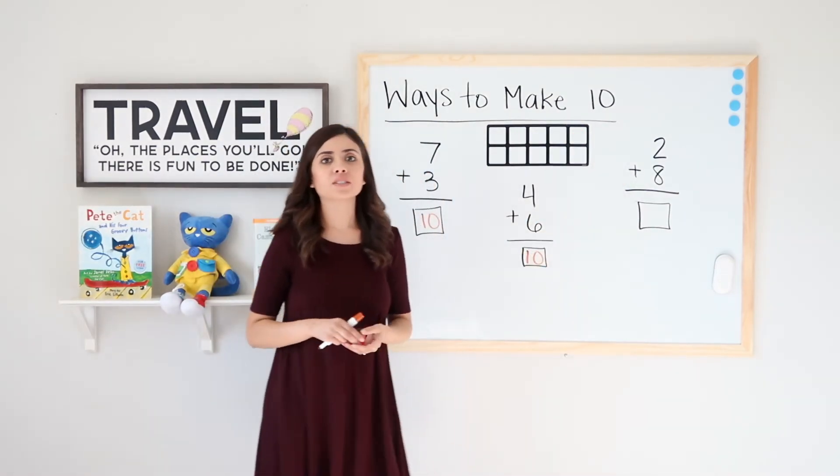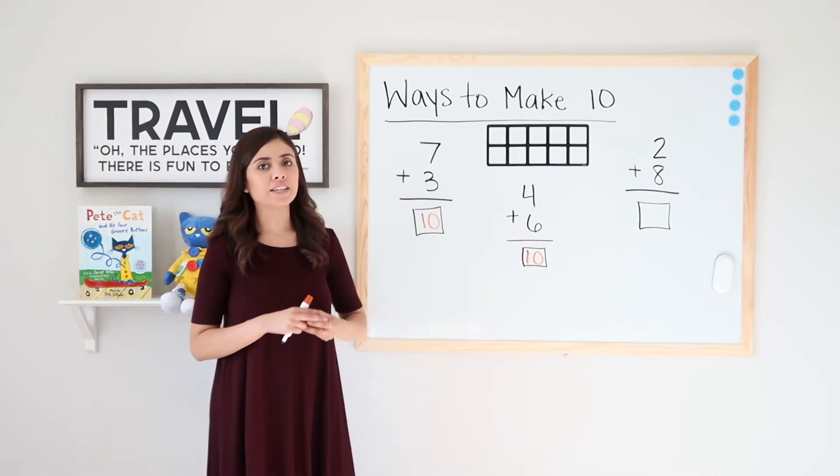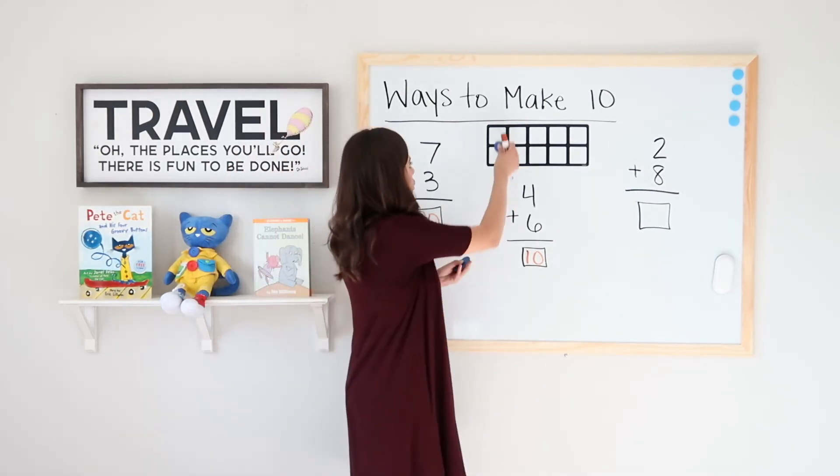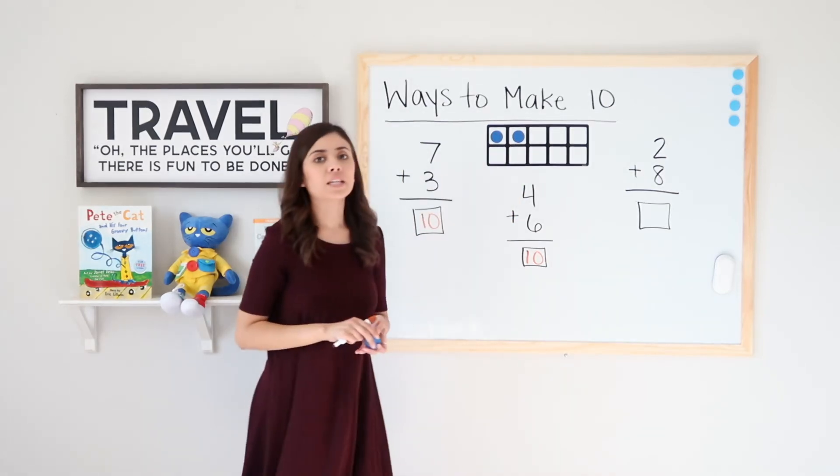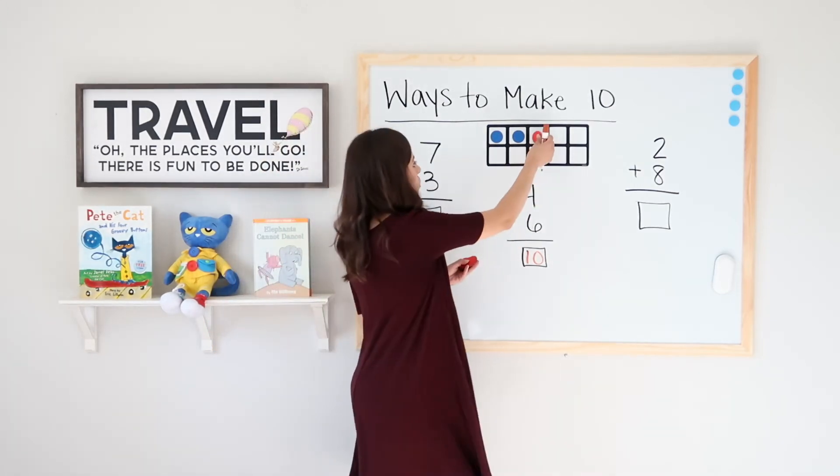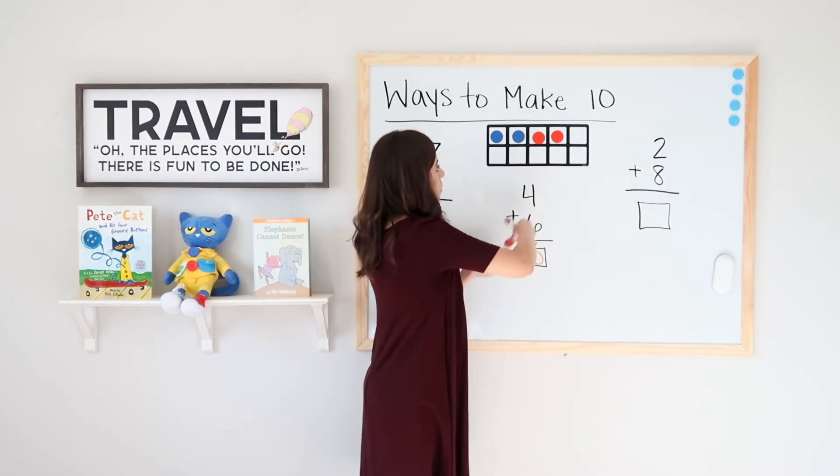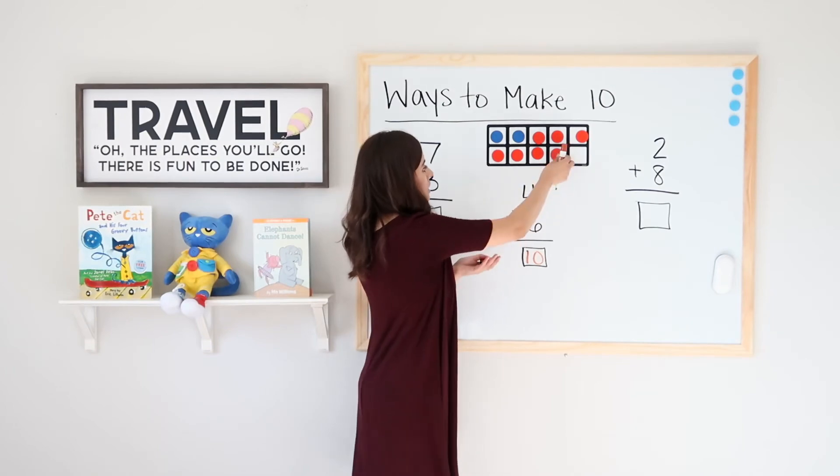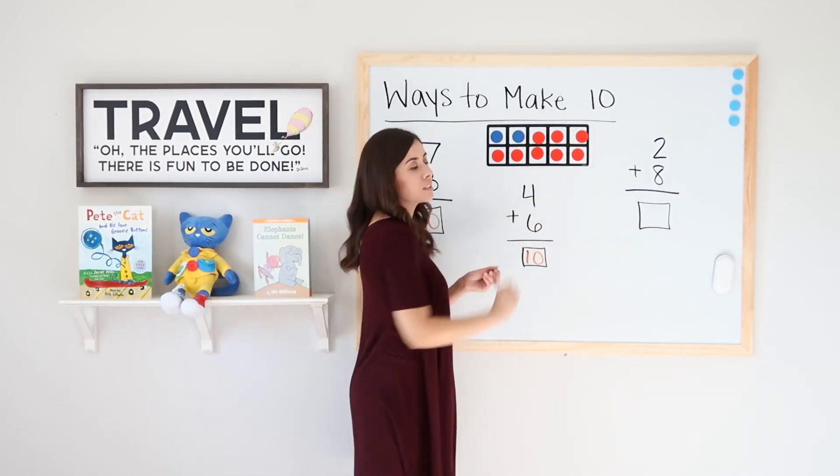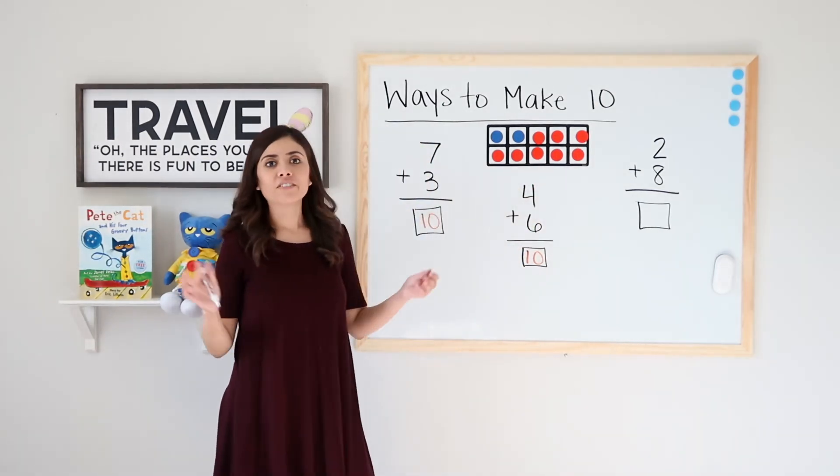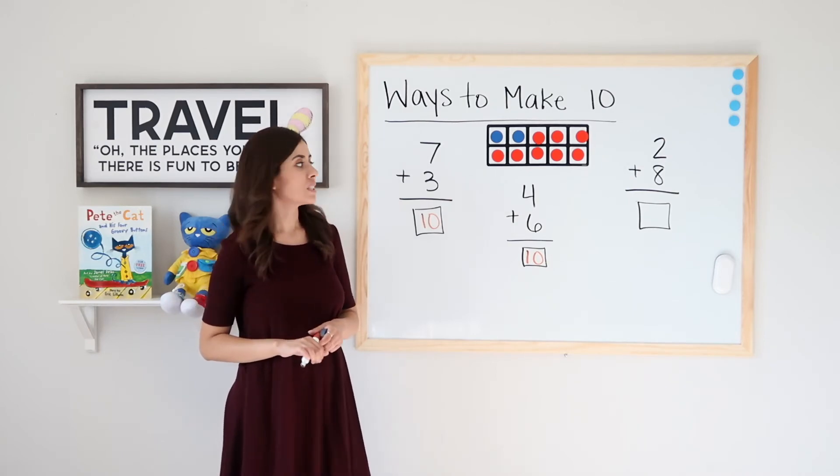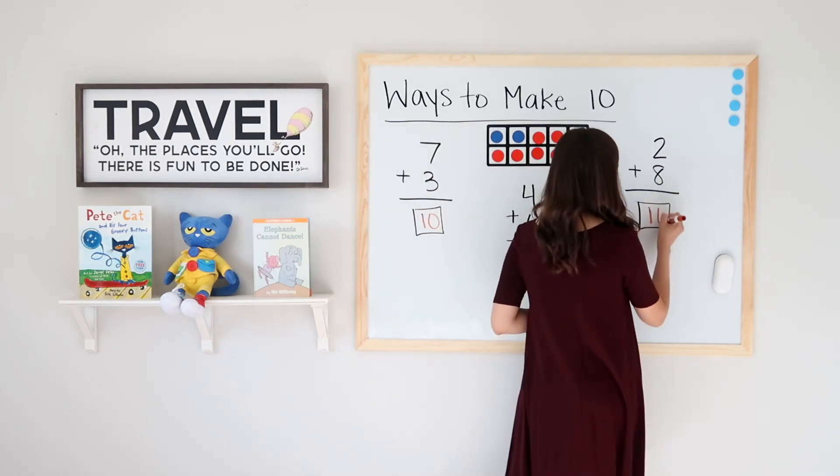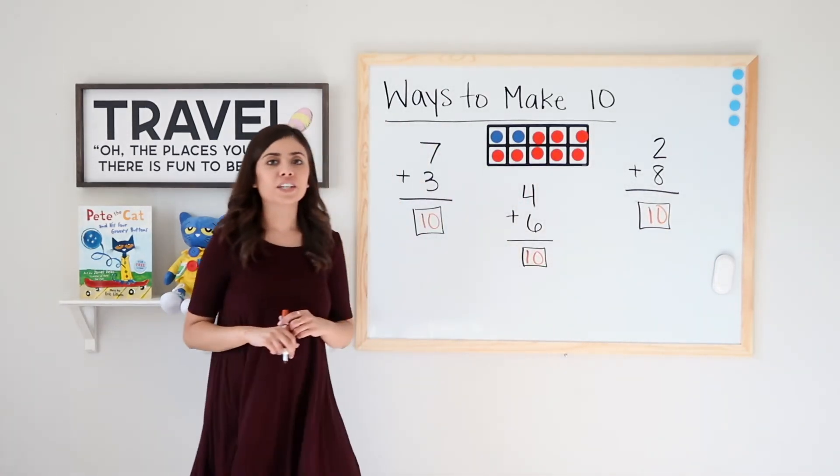Two plus eight. I will start with two blue dots, add eight red dots, and count them in all. So two blue. One, two. Now eight red. One, two, three, four, five, six, seven, eight. Again, I filled up my ten frame. That means that two plus eight equals ten. Very good job.